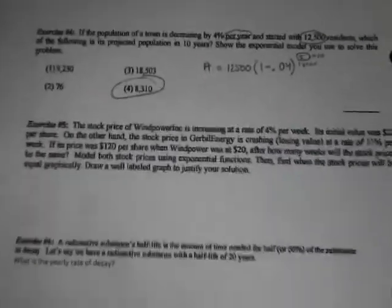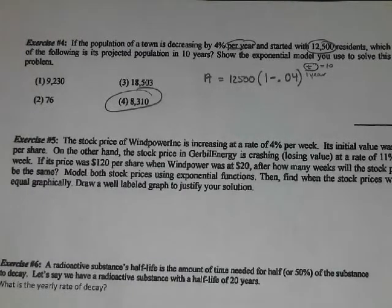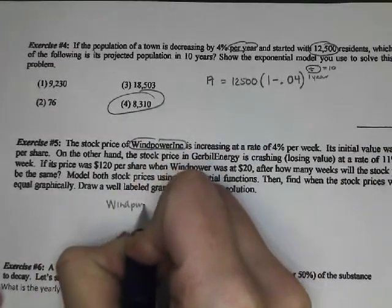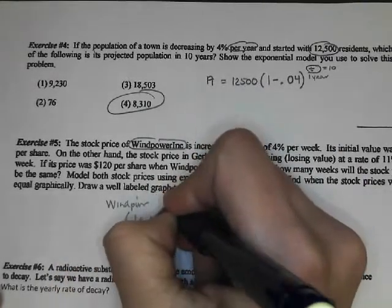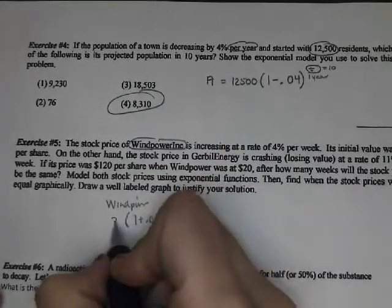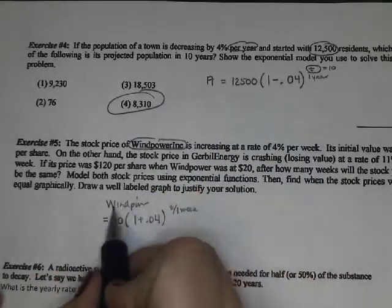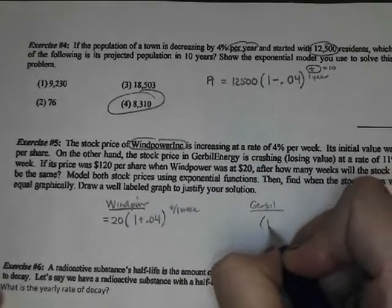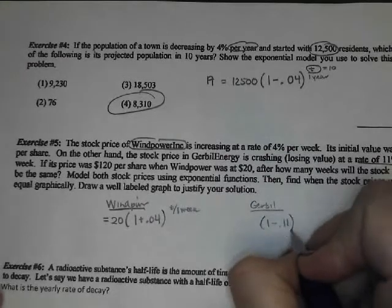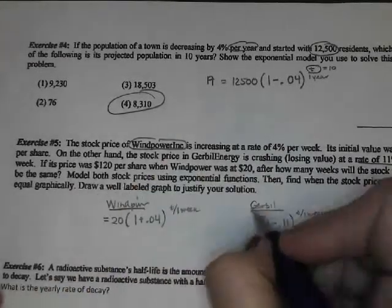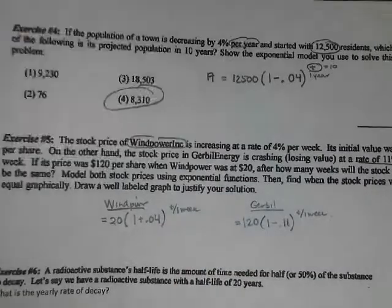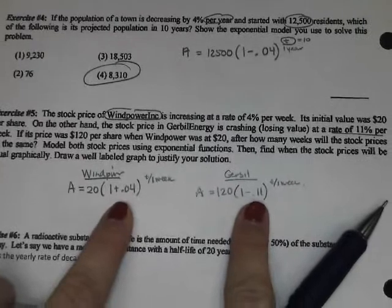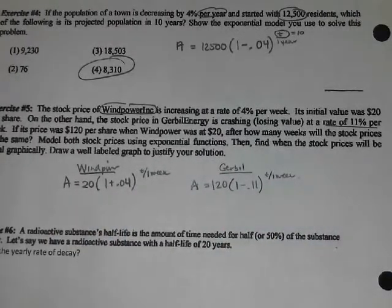Exercise 5. The stock price of Wind Power Inc. is increasing at 4% per week. So the Wind Power, so 1 plus 0.04, and this is per week, so that would be T over 1 week. Its initial value is 20. And then we have a second company, Gerbil Energy, which is losing value, so 1 minus 0.11, 11%, also per week. So T over 1 week. Its price was 120 when this whole thing got started. So they want to know after how many, this is your final stock price, after how many weeks will they be the same. So we would just set them equal to each other, which we don't know how to solve algebraically. We can only solve graphically.